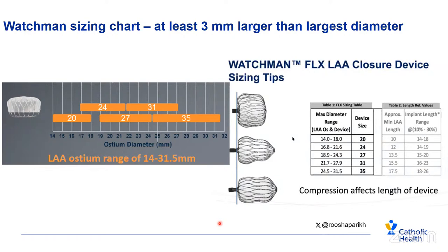The left atrial appendage ostium can range from 14 to 31.5 millimeters. It's also important to look at the minimum LAA length that can accommodate specific devices — you need at least 10 millimeters, ranging up to 18 millimeters. Compression affects the length of the device: this shows normal compression, medium compression, and with more compression the device elongates.